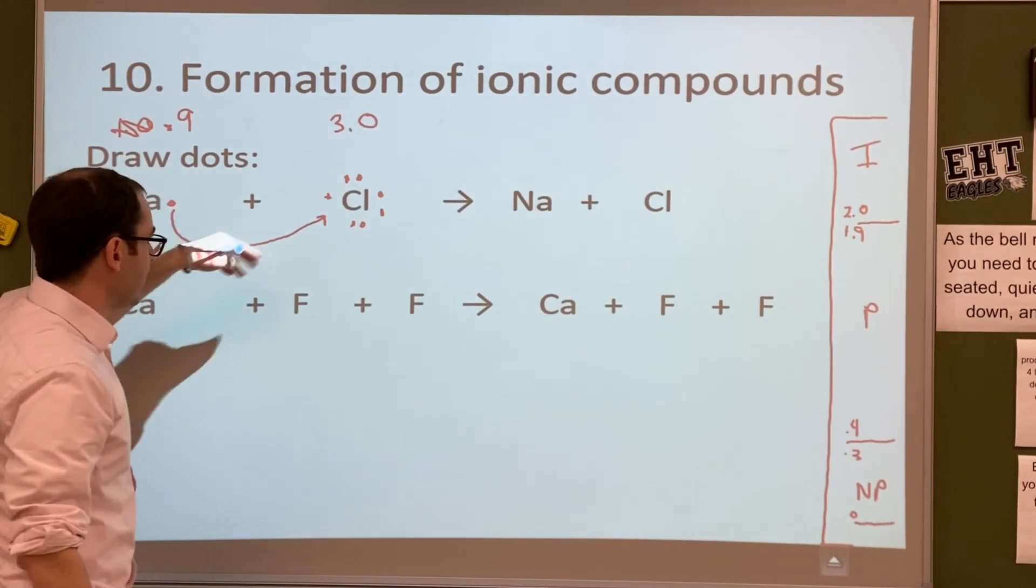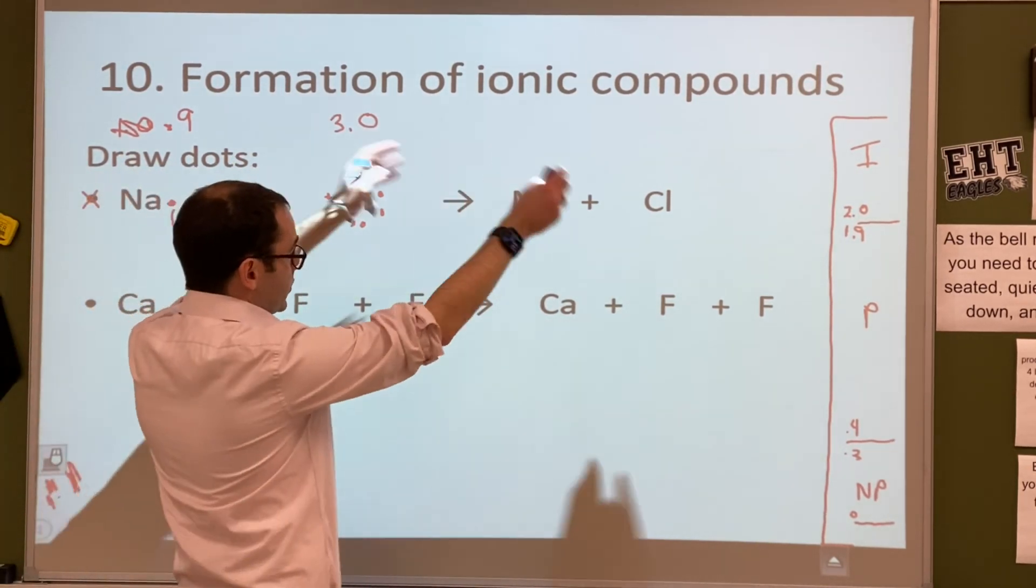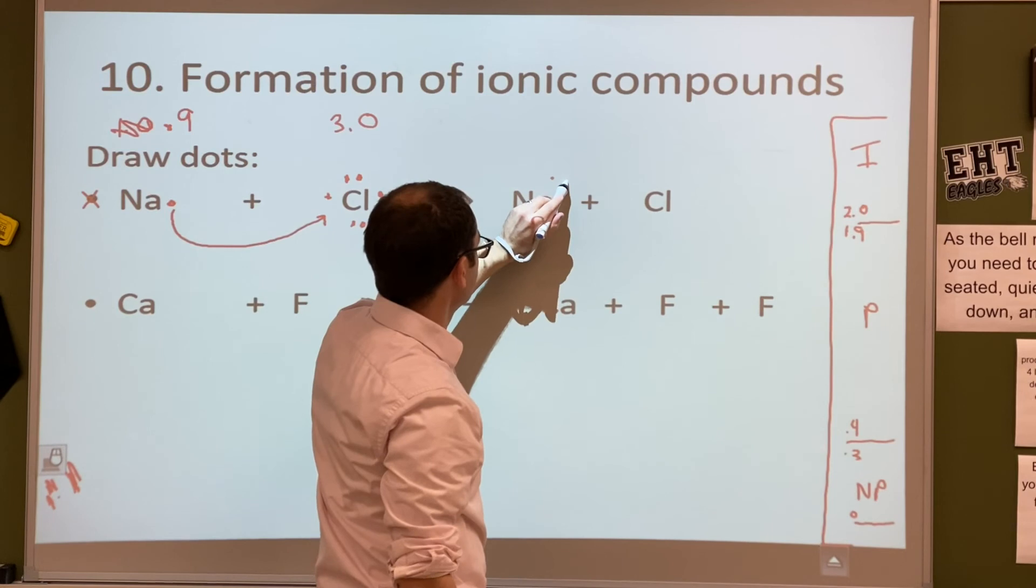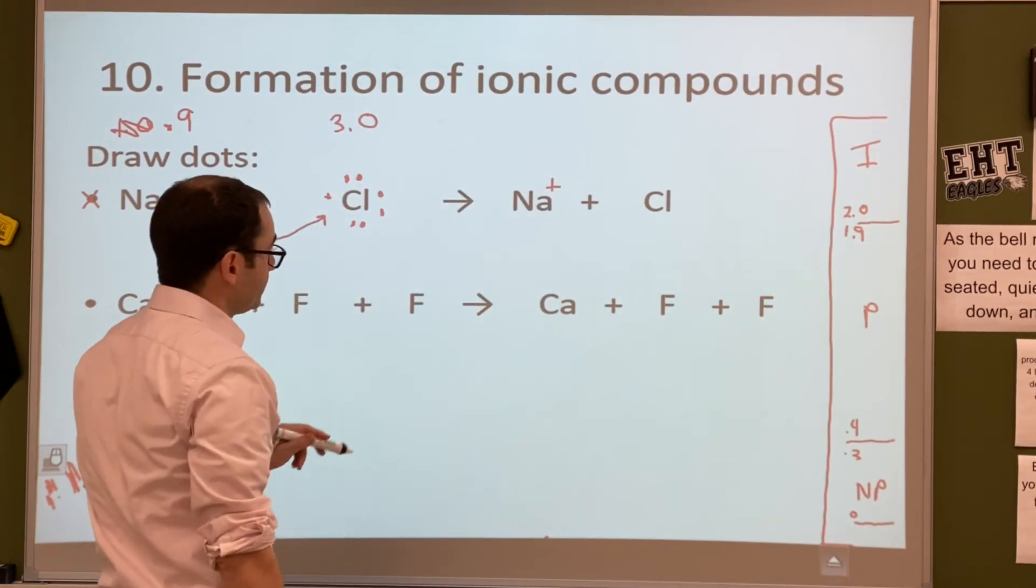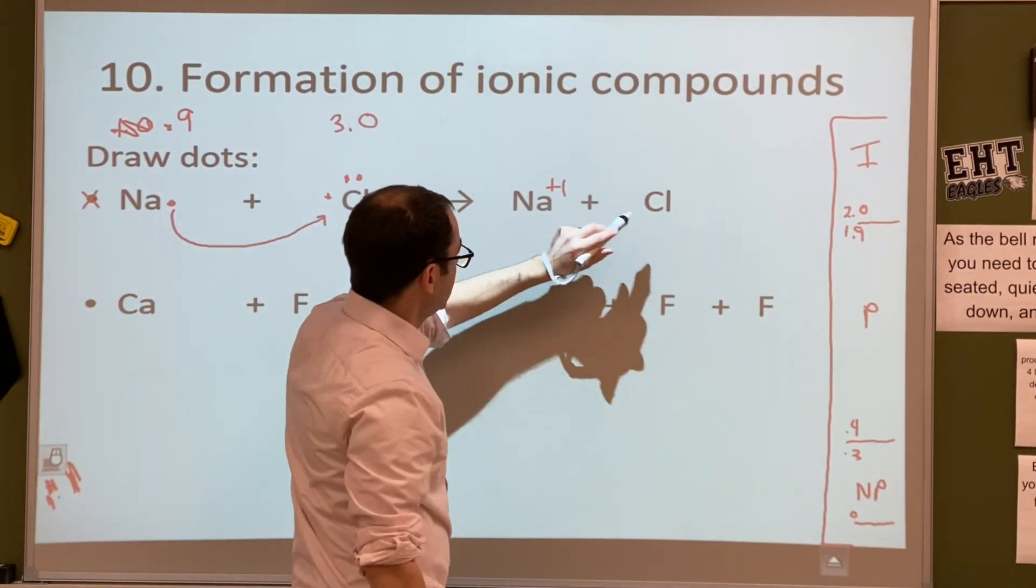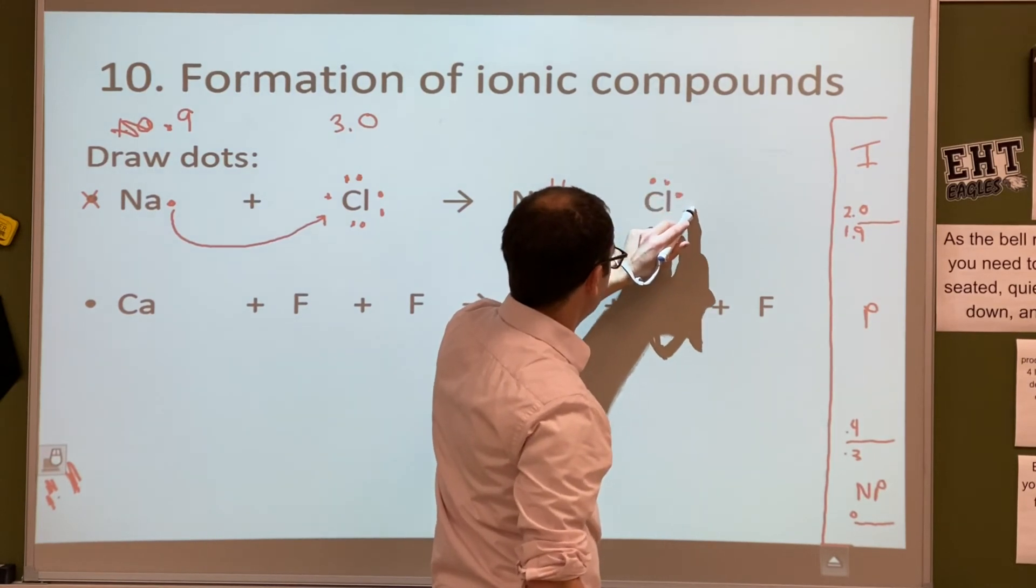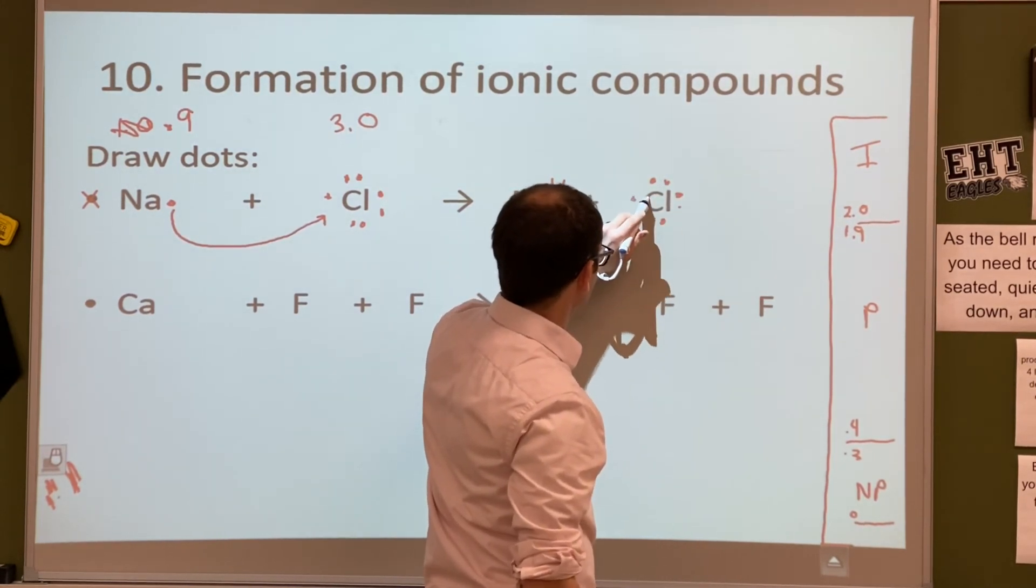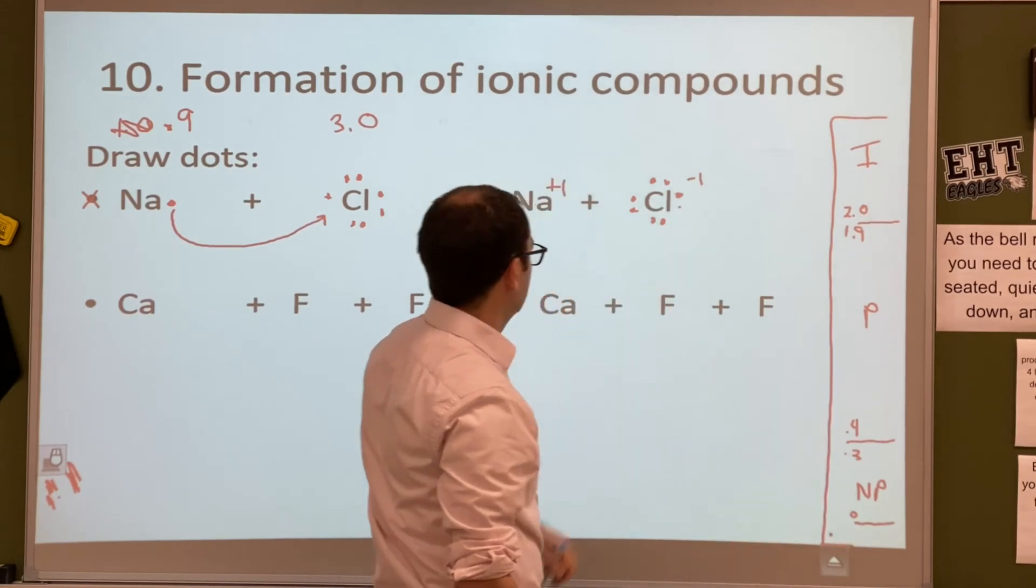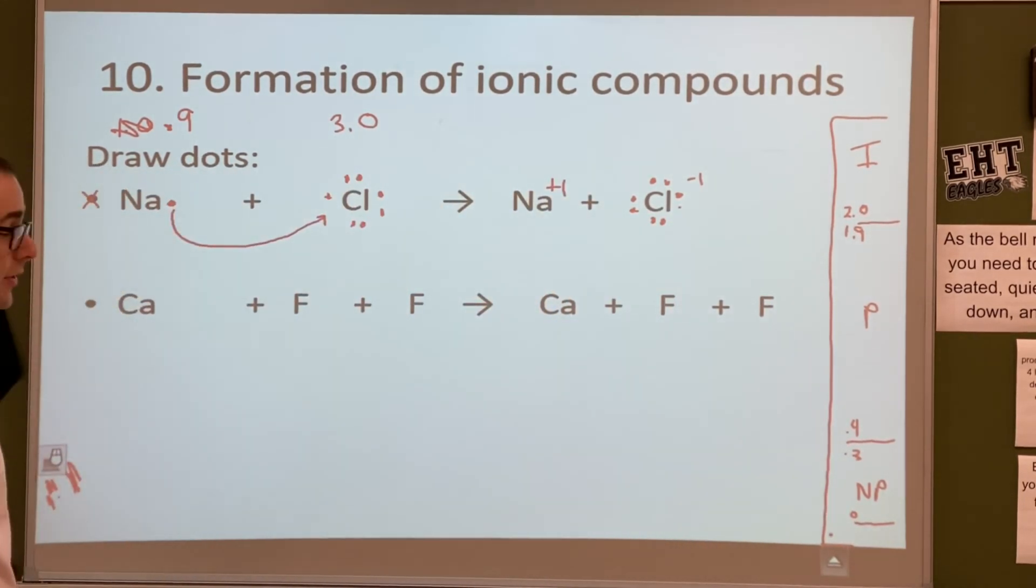So we just kind of show this as an arrow being over there, and then this is what does it look like afterwards. So sodium will be plus 1, because it lost 1 electron, and then chlorine will have those 8 electrons now, and it'll be minus 1. Alright, so there we go for that one. Any questions for that part? No?